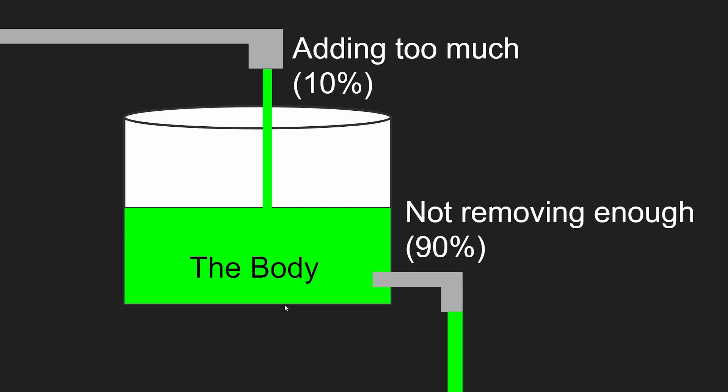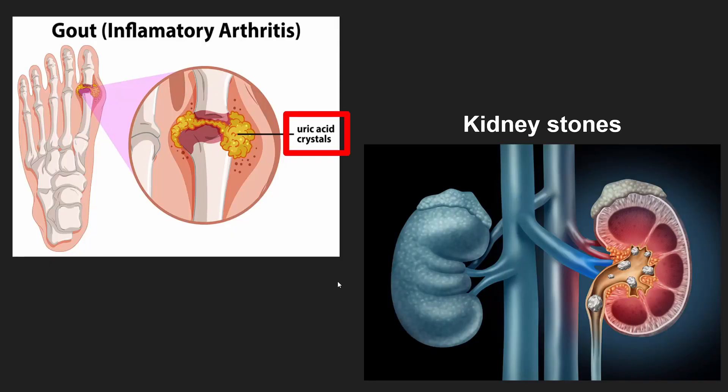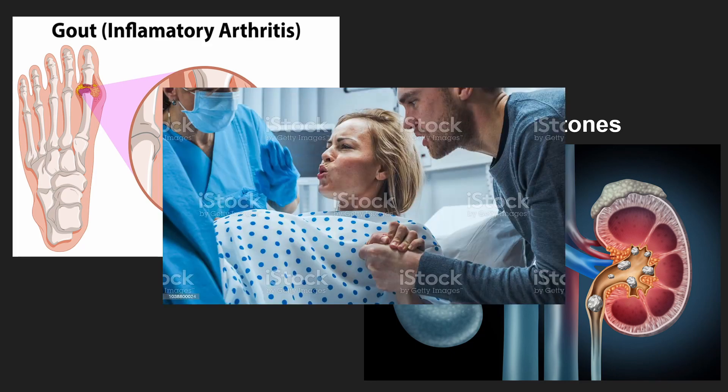That covers the main reasons a person can have hyperuricemia, either by adding too much or not removing enough. Now, you may be thinking, okay, so what's the big whoop with hyperuricemia? Hyperuricemia increases a person's risk of developing gout and kidney stones, two diseases which women who have given birth report are almost as painful as labor.